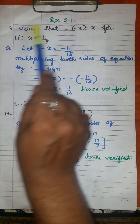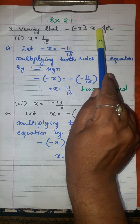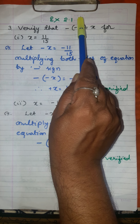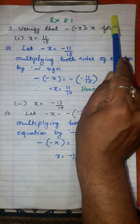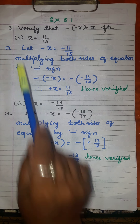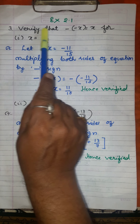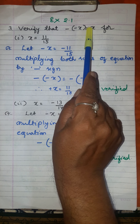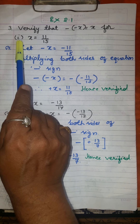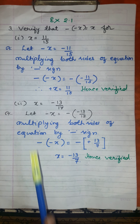Dear student, we shall continue to solve the remaining exercises of 2.1 of chapter rational numbers of class 8 mathematics. Now let us read out the third main. Verify that minus of minus X is equal to X. The first sub-part: X is equal to 11 over 15.